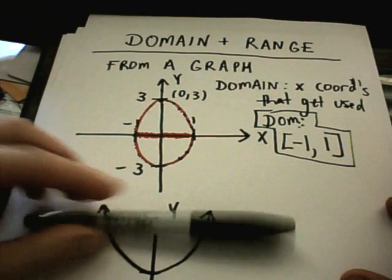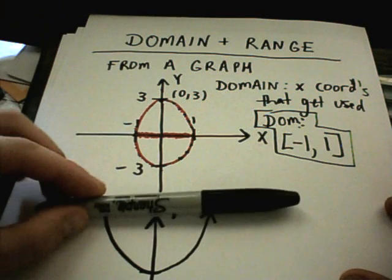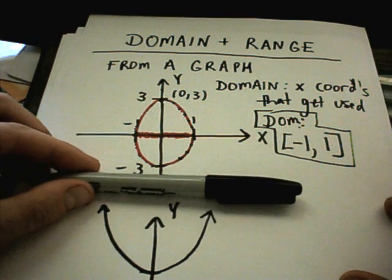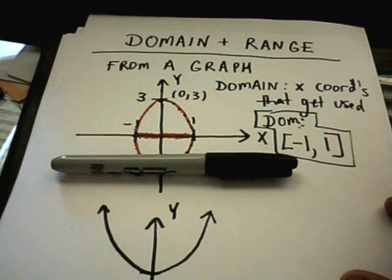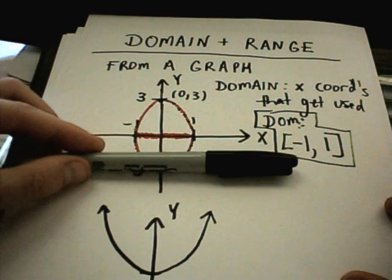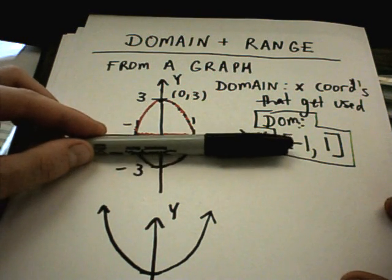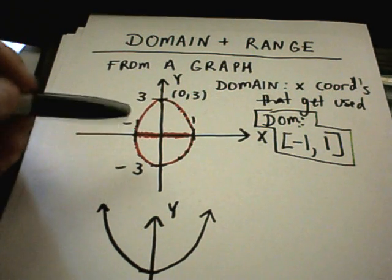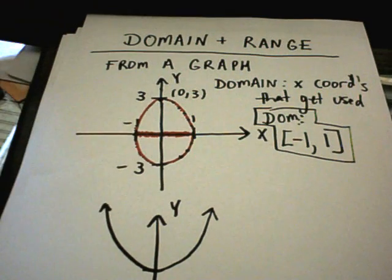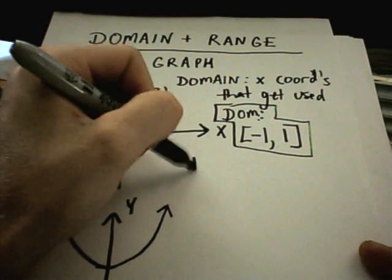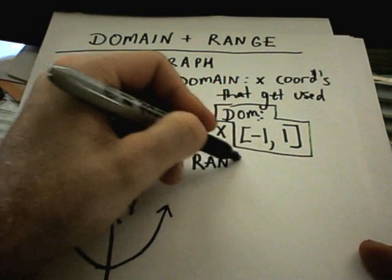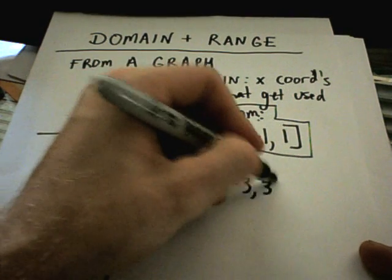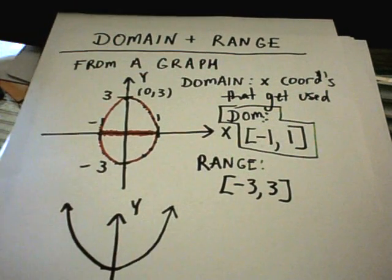The range is going to be the same thing. If I start at the bottom and move up, thinking am I touching the graph yet — not yet — I will be once I hit negative 3, and I'm going to keep hitting the graph all the way up until I get to positive 3. So if I list all the y-coordinates that get used, that would be everything between negative 3 and positive 3. That's what is known as the range.